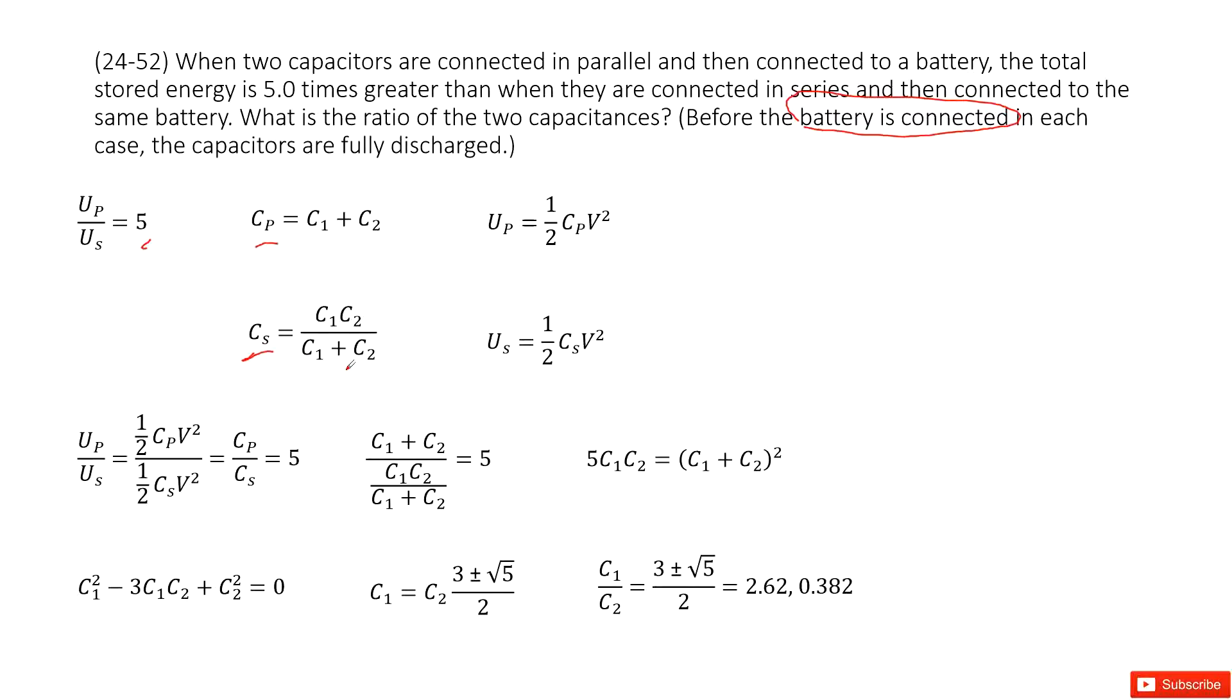Now, very straightforward, we can get the electric energy for parallel connection and series connection in these two functions, right? We use one half C times V squared. V is the battery's electric potential, right?